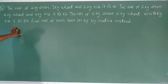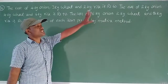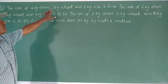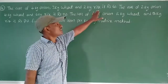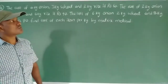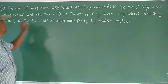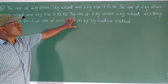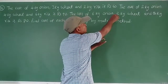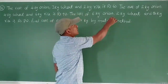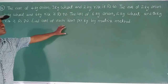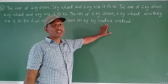The cost of 4 kg onion, 3 kg wheat and 2 kg rice is 60 rupees. The cost of 2 kg onion, 4 kg wheat and 6 kg rice is 90 rupees. The cost of 6 kg onion, 2 kg wheat and 3 kg rice is 70 rupees. Find the cost of each item per kg by matrix method.